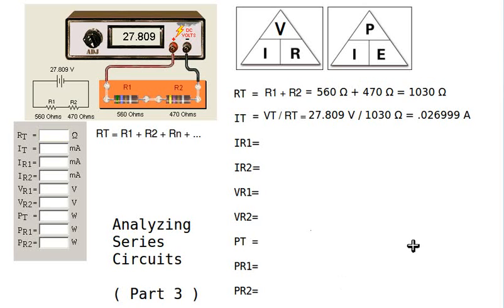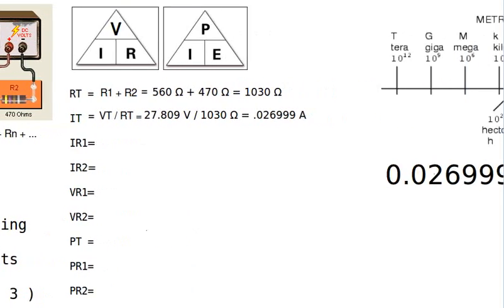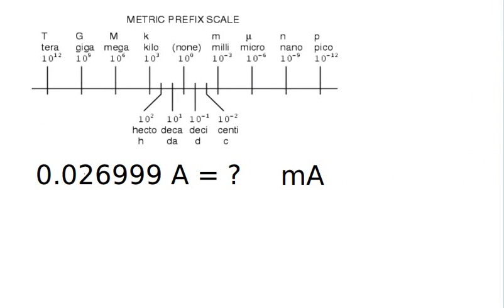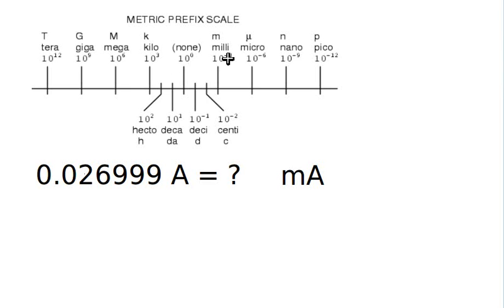However, we really want our answer in milliamperes, since a multimeter most typically measures in milliamps. To convert, we go from amperes — which have no metric prefix, i.e., 10 to the zero power — to milli, which is 10 to the negative three. Going from a larger unit to a smaller unit means moving three places to the right on our chart.